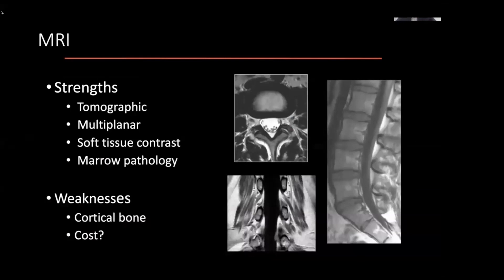MRI — again, the strengths are mostly around its ability to differentiate different types of contrast. We have different types of sequences. You may have seen the terms T1, T2, STIR, FLAIR, etc.